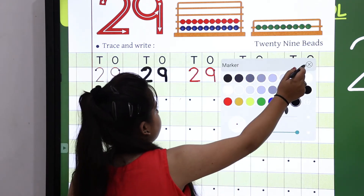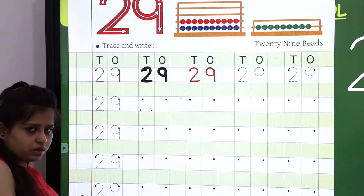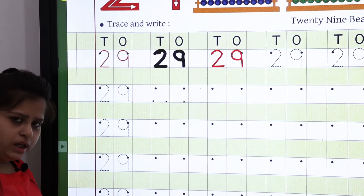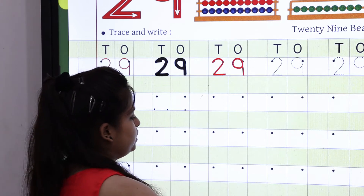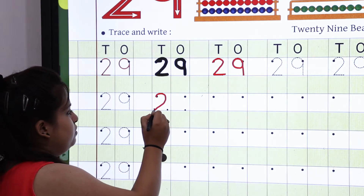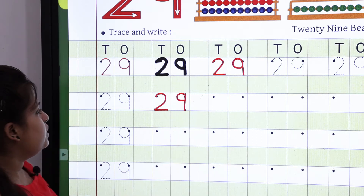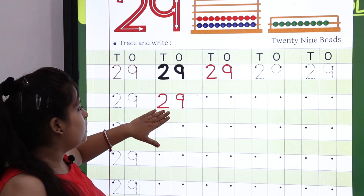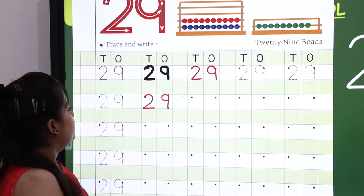Now, parents, please check out the dots. How do you put the dots? One is already given. You have to put 2 dots. For 9, you need 2 — one is already there, so you have to put 1 dot only. For 2, you need a curve and a sleeping line. For 9, you need a standing line and a curve. You are not supposed to write outside the blocks — write within the blocks and within the lines. This is our 29.